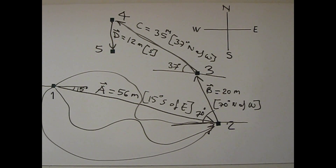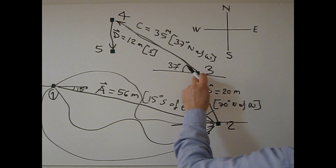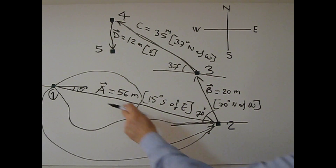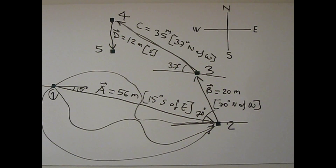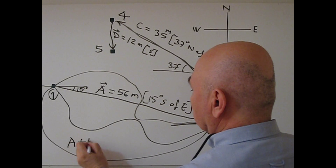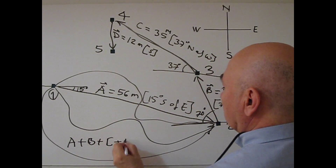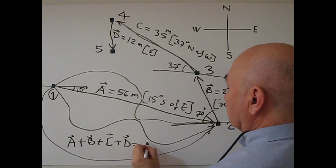So basically, I traveled from location 1, 2, 3, 4, and 5 — vectors A, B, C, D. How can I find the sum of A, B, C, and D? What is vector A plus vector B plus vector C plus vector D? This is the question.